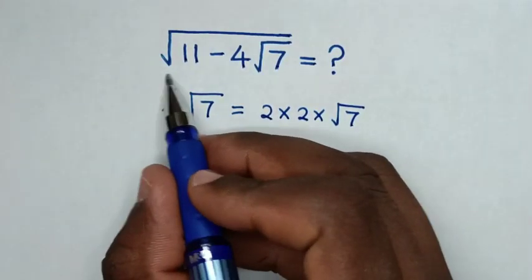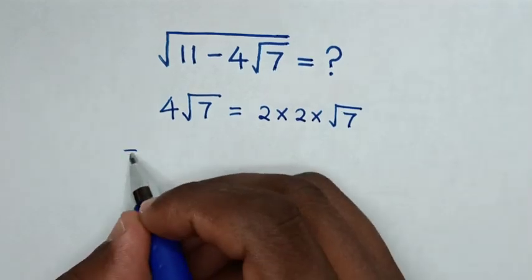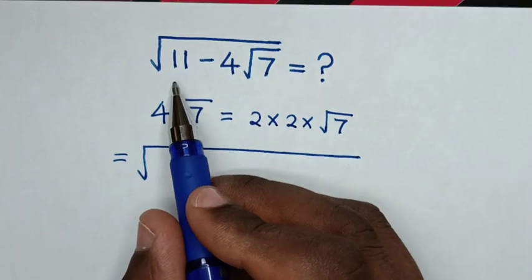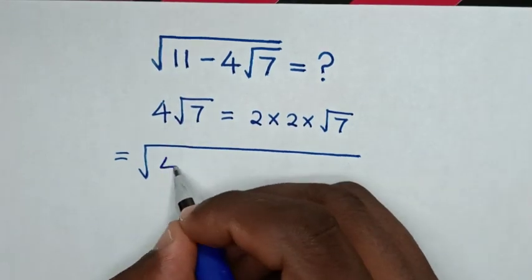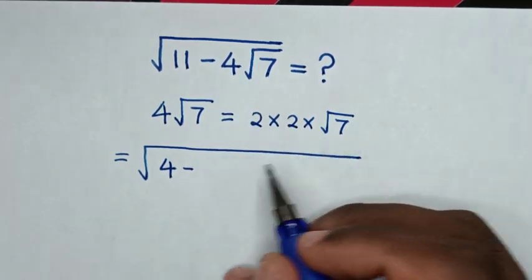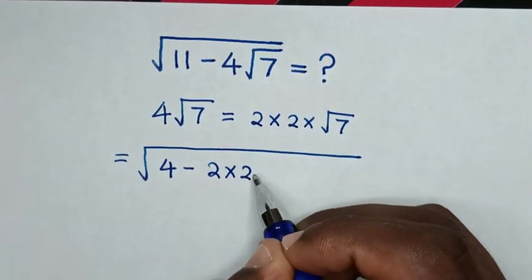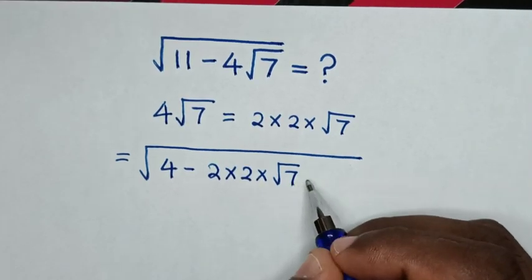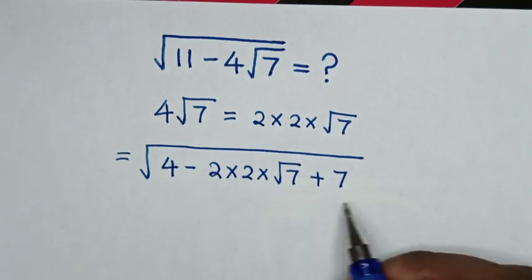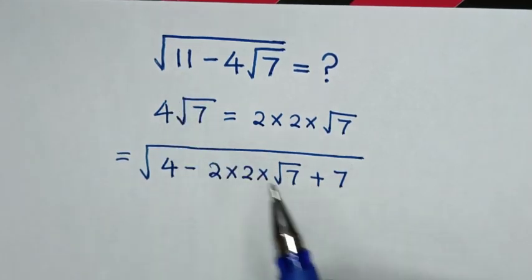Then, this expression will be equal to square root of 11, which is same as 4 plus 7. So we write 4, then minus 2 times 2 times square root of 7, then plus 7, because 4 plus 7 is 11. Then, in the next step,